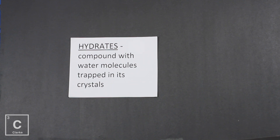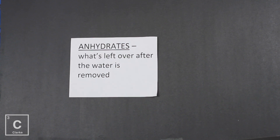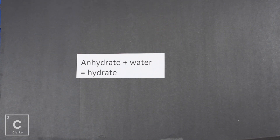We need to know that definition, but we also need to know the opposite of that, which is the anhydrate. That prefix 'an' is just the opposite. So if a hydrate has water, an anhydrate is what's left over after the water is removed. So if we have the anhydrate plus water, that gives us the hydrate.